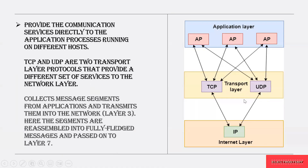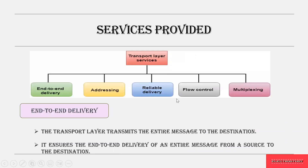All the segmented data sent from the transport layer is again reassembled completely to form a complete message. There are different services provided in the transport layer to ensure there is no error while transmitting a packet and to control congestion in the network. The services provided by the transport layer are: end-to-end delivery, addressing, reliable delivery, flow control, and multiplexing.